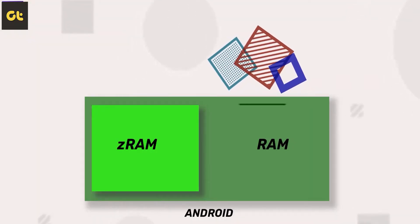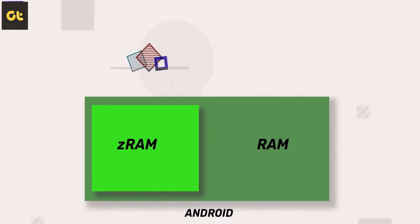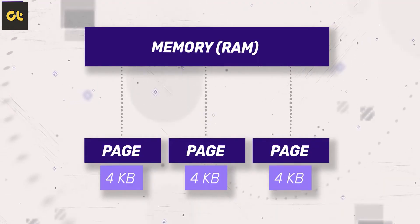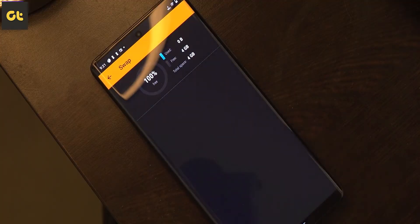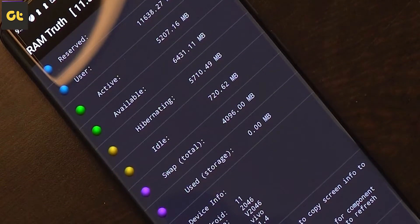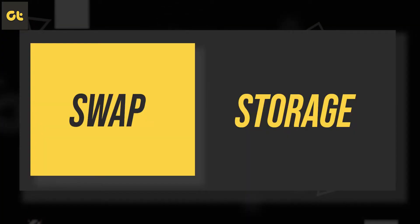So first things first — what exactly is virtual RAM? I've already done a dedicated thorough video talking about virtual RAM, highlighting how Android uses memory management, what virtual RAM is, and how it differs from ZRAM. You can watch that video via the link above. But to summarize: virtual RAM is a technique used by many Linux distros that makes use of a swap partition located on your storage, instead of using paging for memory management.